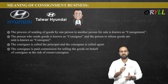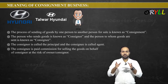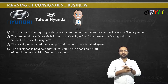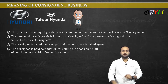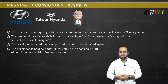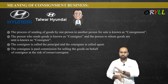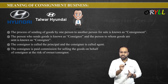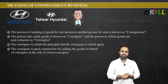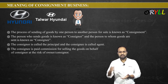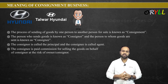The consignee is paid commission for selling the goods on behalf of the consigner, at the risk of the owner — the consignor. If the goods are destroyed, or if anything goes wrong, or if the customer does not pay the price, then this risk will be borne by the consignor — Hyundai — and not the consignee — Talwar Hyundai. So, the consignor pays commission to the consignee because the consignee is selling the goods on their behalf. This is an important point to keep in mind.